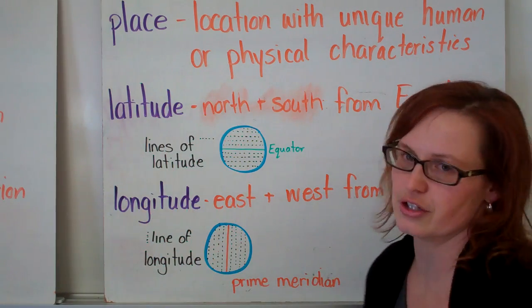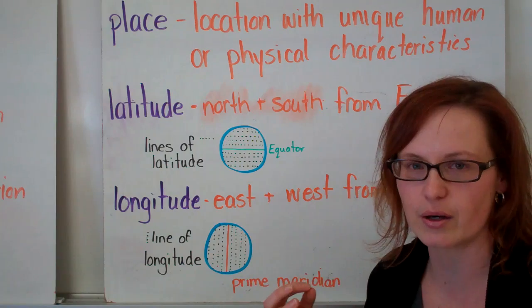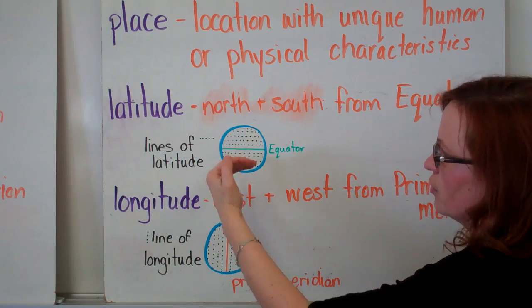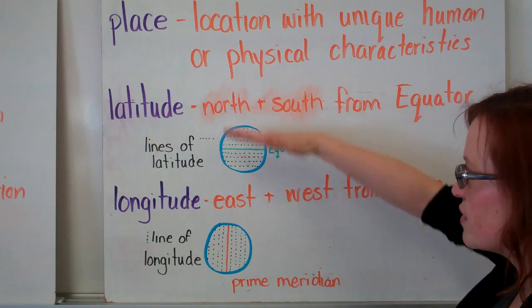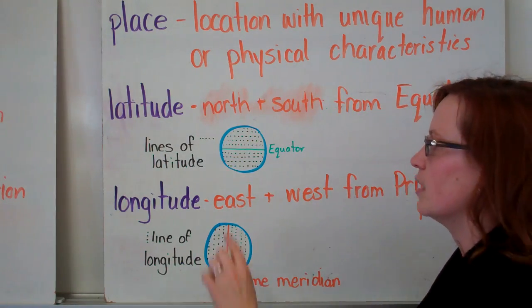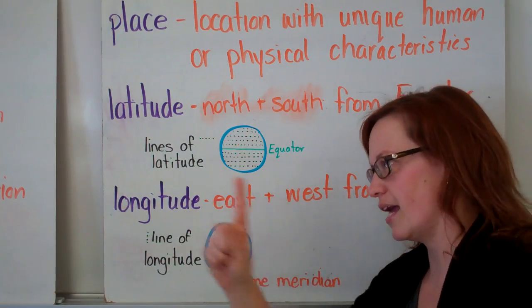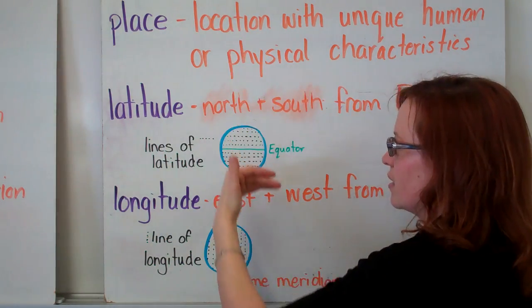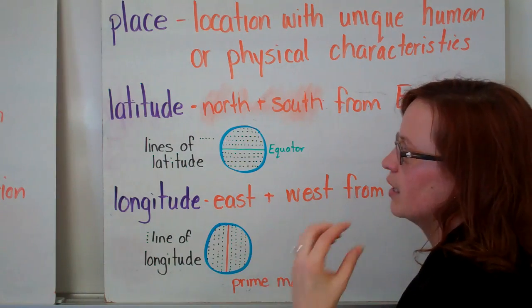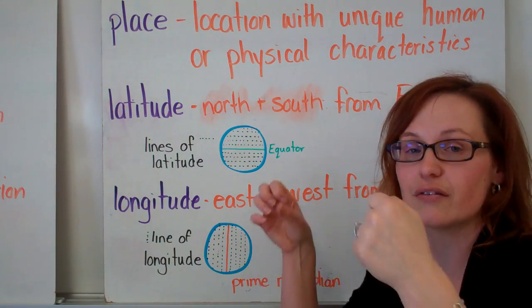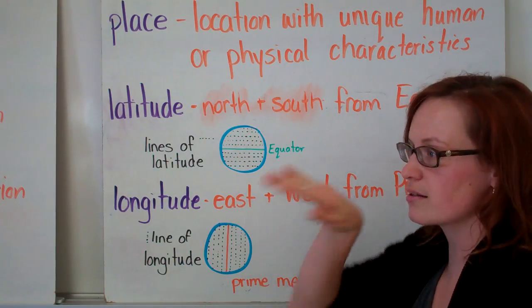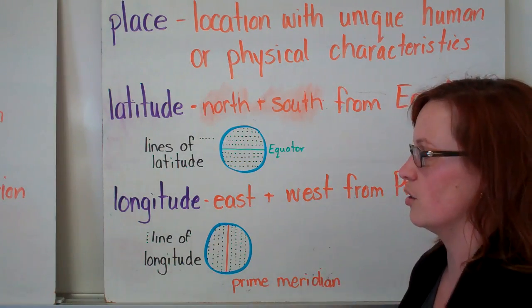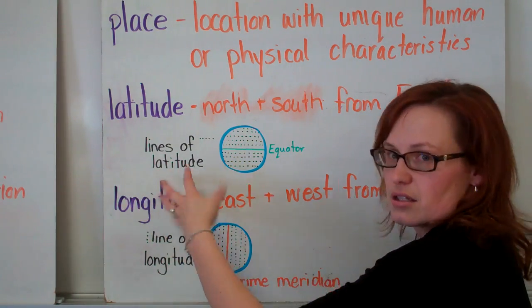Latitude and longitude — these are a little bit complicated, so you want to find ways to remember which one is which. Lines of latitude measure north and south from the equator; the lines go east and west, but the degrees go north and south of the equator. The way I remember is to think of a ladder — the rungs on a ladder go up, and they're sort of like the lines of latitude. Ladder, latitude — that's how I remember.